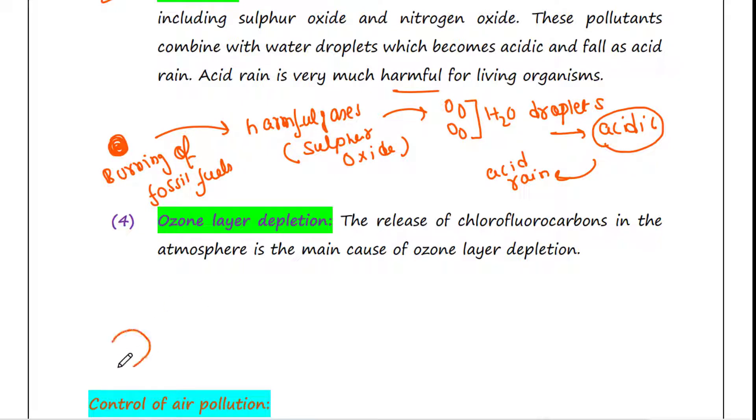Next is ozone layer depletion. We have ozone layer in the stratosphere. Suppose this is the earth, here we have ozone layer in the stratosphere and this layer is mainly composed of ozone.